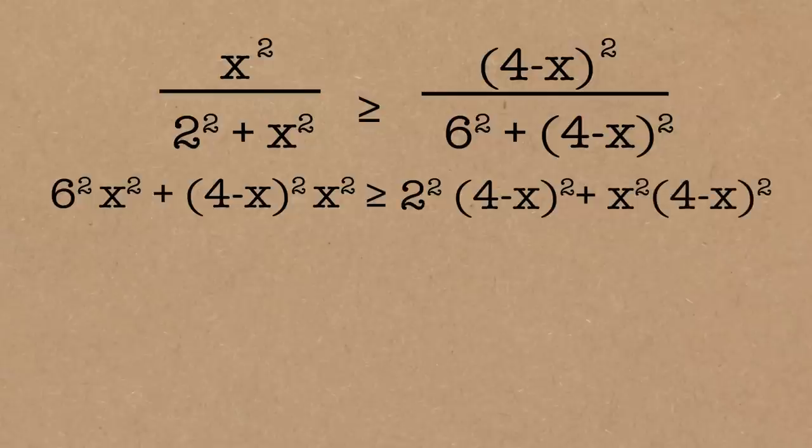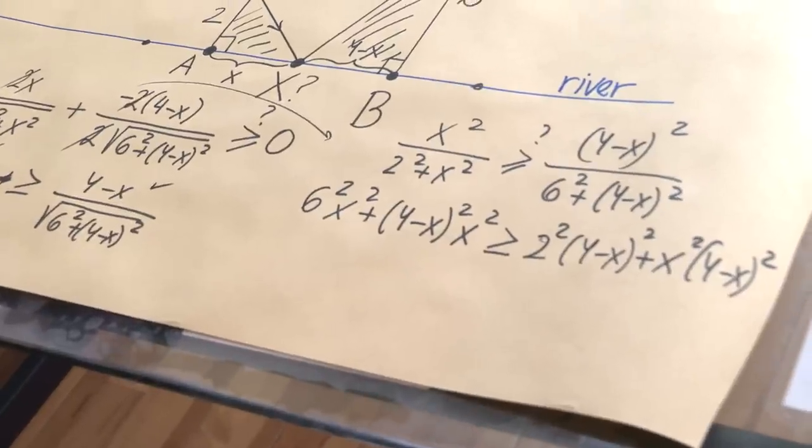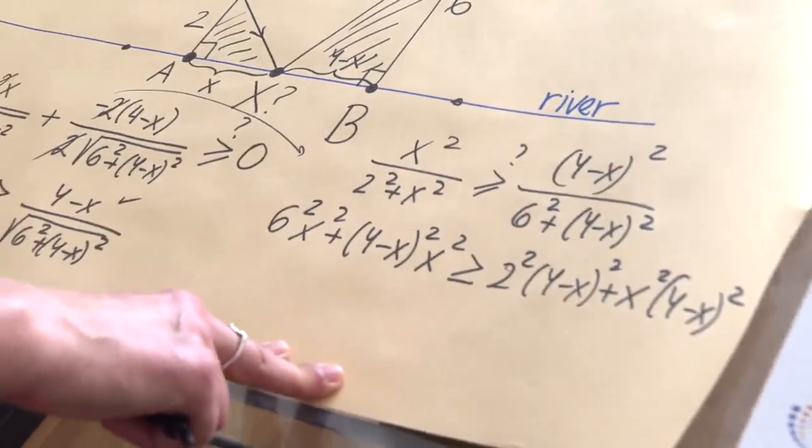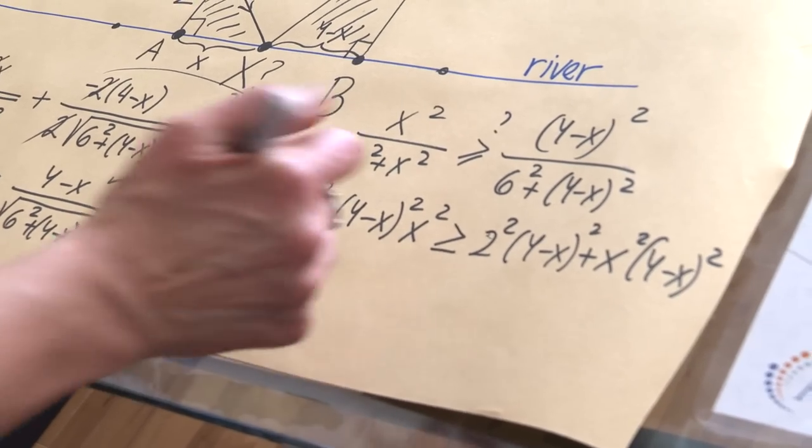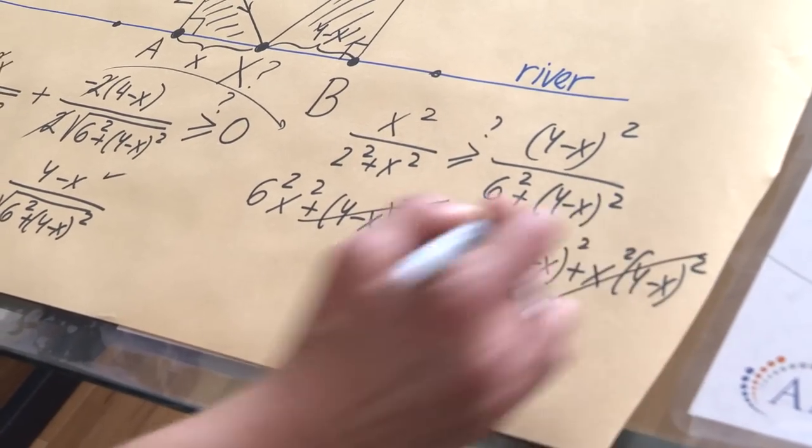And then since everything is positive, I'm going to cross multiply. 6 squared x squared plus 4 minus x squared x squared. We're done this way and now crossing the other way. 2 squared, 4 minus x squared, plus x squared, 4 minus x squared. Now, the key step. Why do they keep everything so compact? Because it looks to me, I can simplify. Can I? How about I can just get rid of those two? They're the same. Miracle occurs.